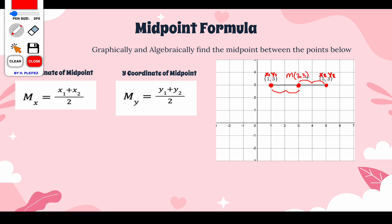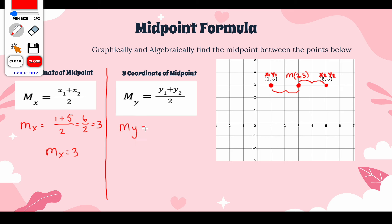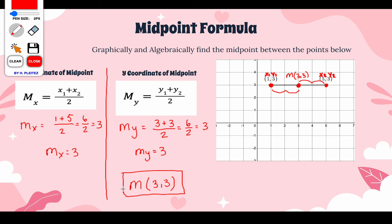Now let's see if this holds up algebraically. For the x-coordinate of our midpoint, we take x1 and x2, add them up, and divide by 2. Our x1 is 1 plus our x2 which is 5, dividing that by 2 gives us 6 over 2, which is 3. For the y-coordinate, we take y1 which is 3 and y2 which is also 3, add them, and divide by 2. That's 6 over 2, giving us 3. So our midpoint M is (3, 3) — the same value we got graphically.